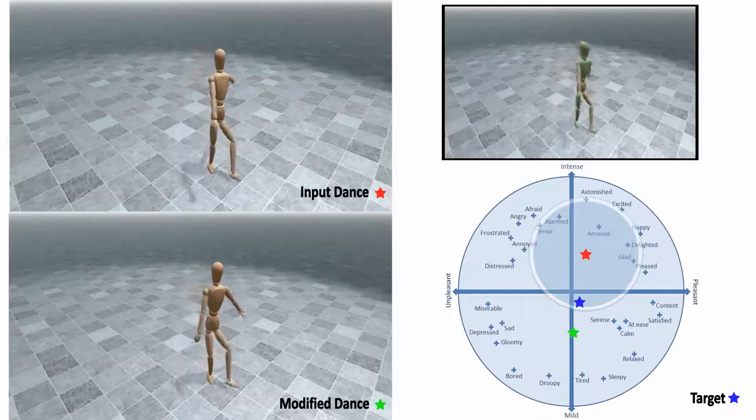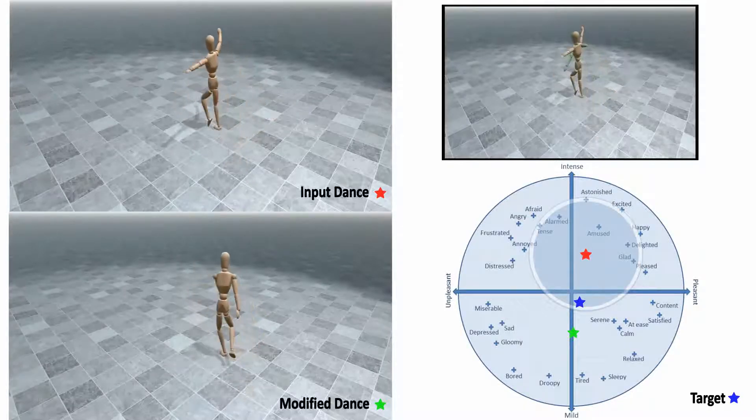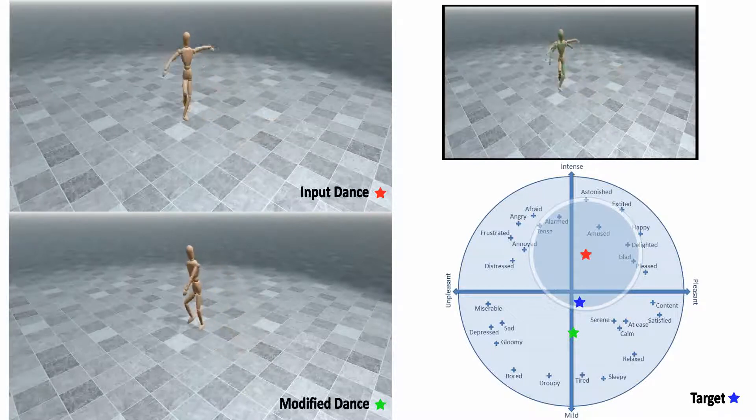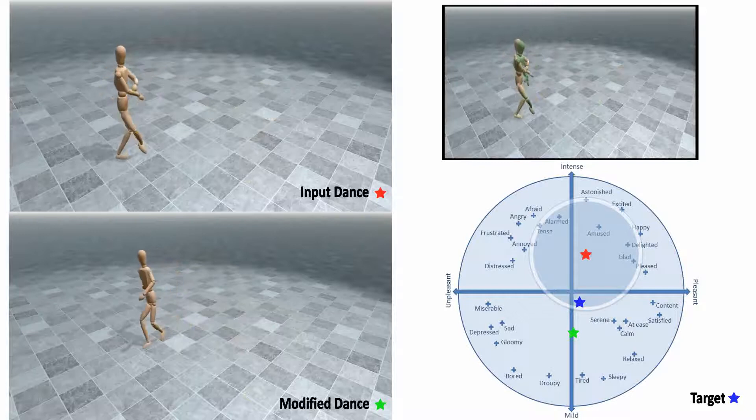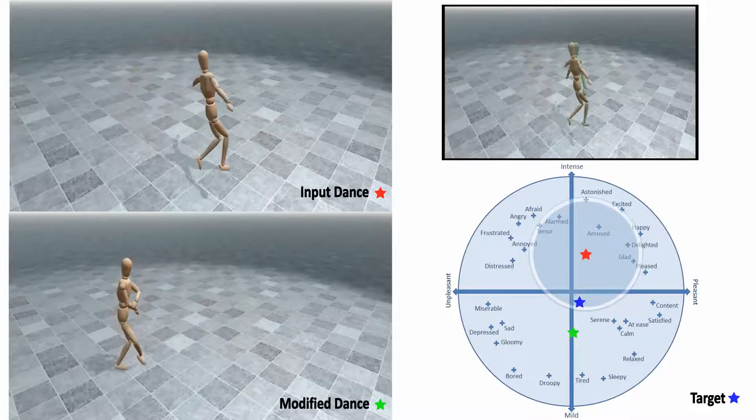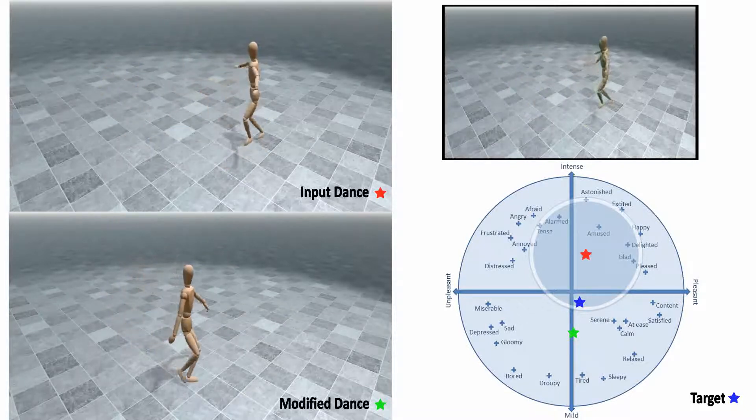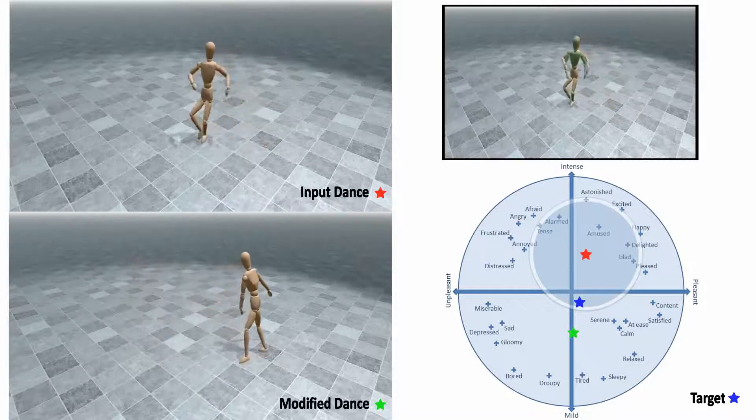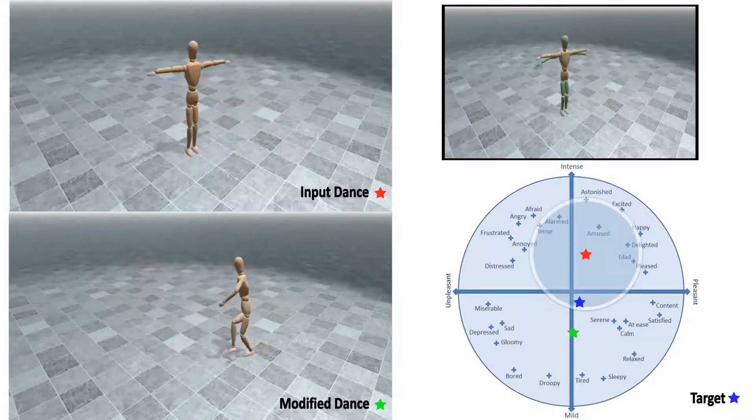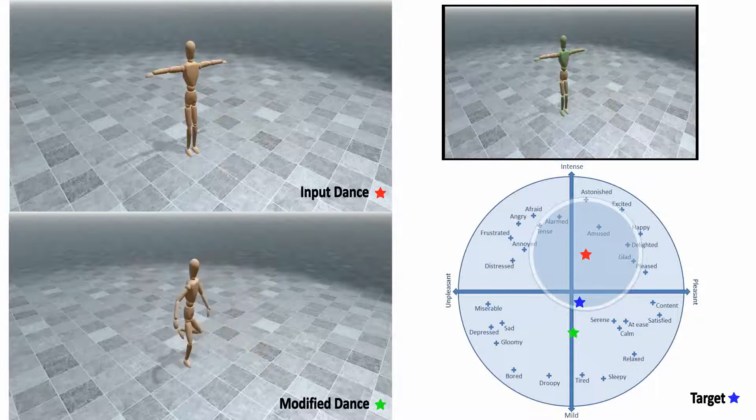Since the performer's velocity is one of the features considered for modification, the two performances are not synchronized. At the top right video, the two characters are synchronized and overlaid to make our skeletal modifications more apparent. The input motion is visualized using a brown character, whereas the green character is animated using the stylized motion.